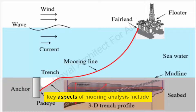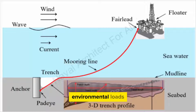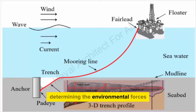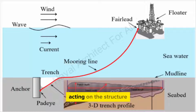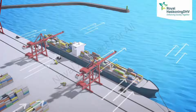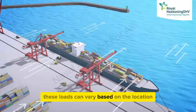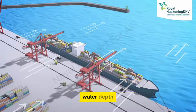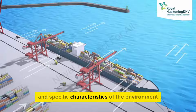Key aspects of mooring analysis include environmental loads — determining the environmental forces acting on the structure, such as wind forces, wave forces, and currents. These loads can vary based on the location, water depth, and specific characteristics of the environment.